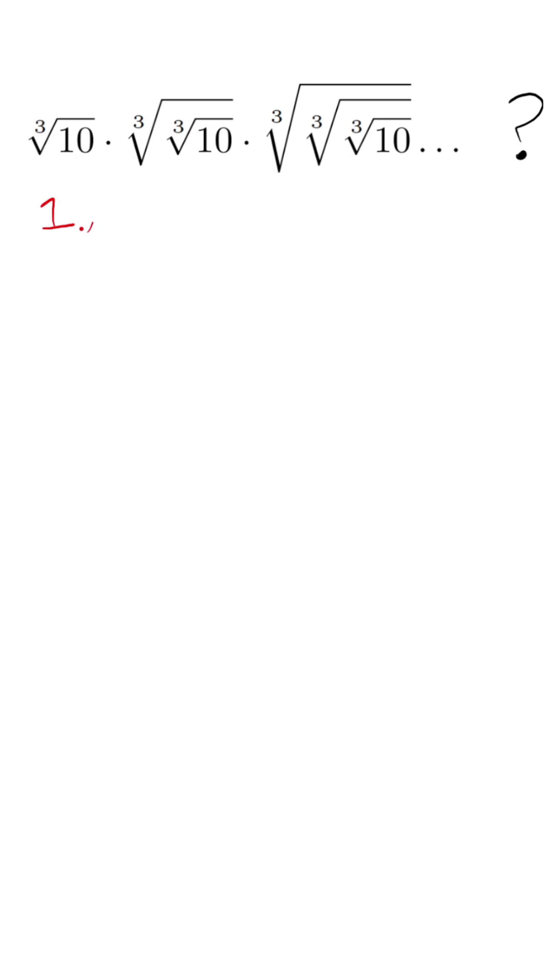The first rule is the nth root of a number can be written as that number to the 1 over n power. You can write the cube root instead as a one-third power for each factor.